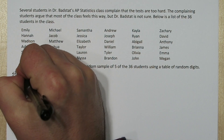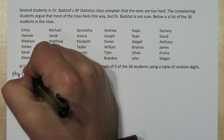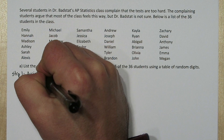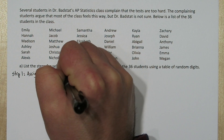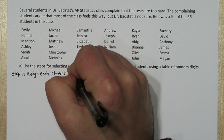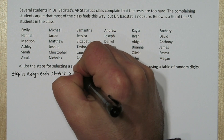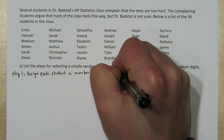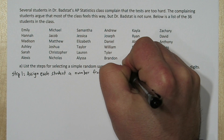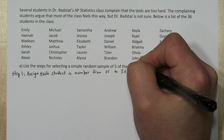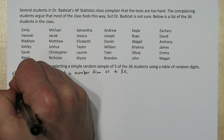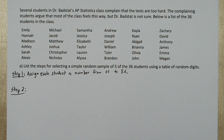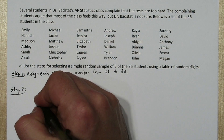Our first step is going to be to assign each student a number from 01 to 36. It's important you don't start at 1 — you have to start at 01 because each number we assign to the students has to be two digits long to make each number equally likely to be selected from our random number list.